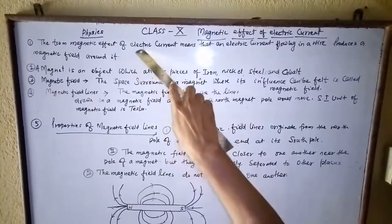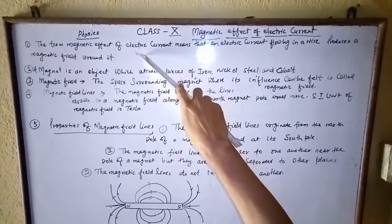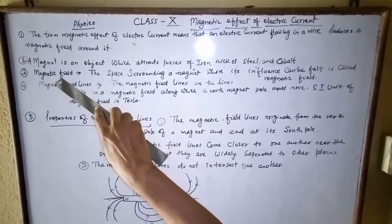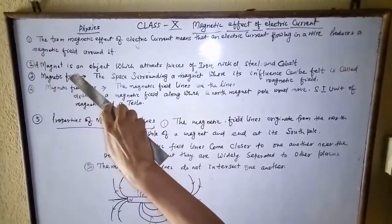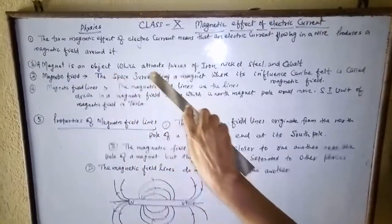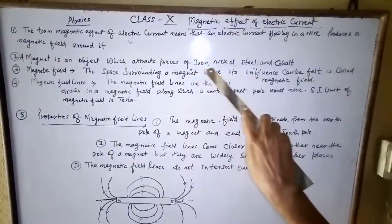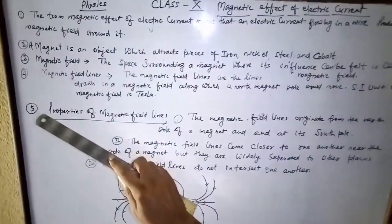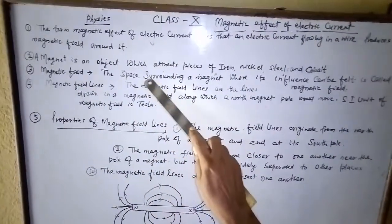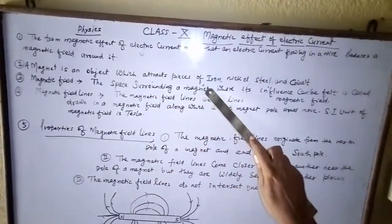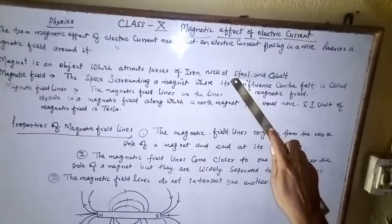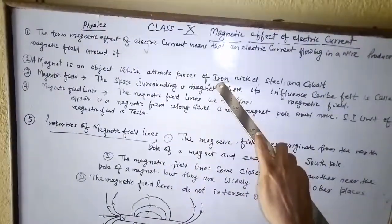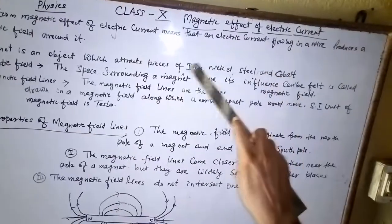Now we will discuss what is a magnet. A magnet is an object which attracts pieces of iron, nickel, steel, and cobalt. In other words, a magnet is a substance that attracts magnetic substances like iron, nickel, steel, and cobalt. Iron, nickel, steel, and cobalt are magnetic substances.